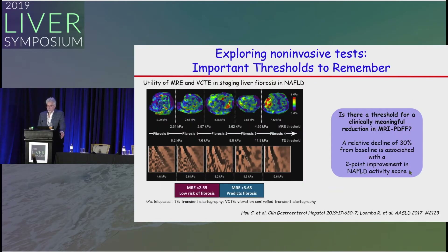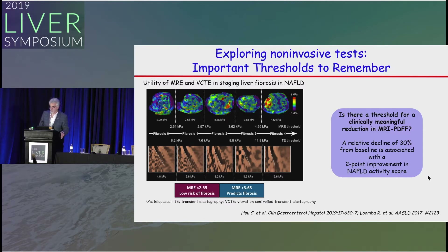There are important MRE thresholds: below 2.55 indicates lower risk of fibrosis, above 3.63 indicates higher risk. These thresholds are now used in patients who don't want liver biopsies before and after treatment. A relative decline of 30% from baseline MRI-PDFF is associated with a two-point improvement in NAFLD activity score — a nice surrogate approach for research trials.